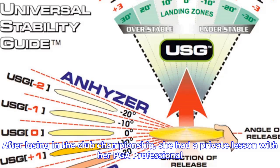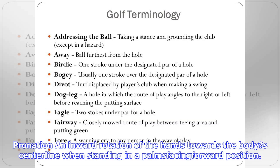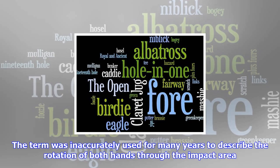Loosened grip: anytime a player opens his fingers and loses control of the club. When this happens at the top of the backswing, it is often referred to as playing the flute. Once he made the grip changes his PGA professional suggested, his problem with a loosened grip was corrected.